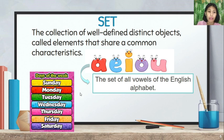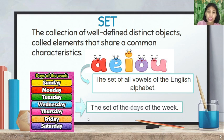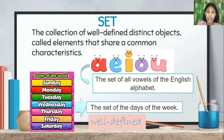Another example: Sunday, Monday, Tuesday, Wednesday, Thursday, Friday, and Saturday — these are the set of days of the week. We call these two examples well-defined sets, because they share a common characteristic with a specific distinction.